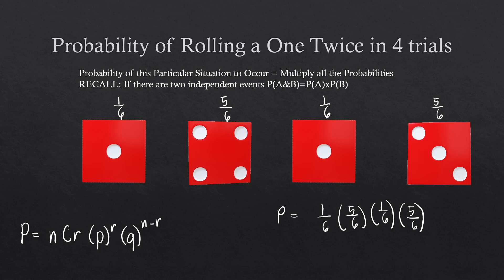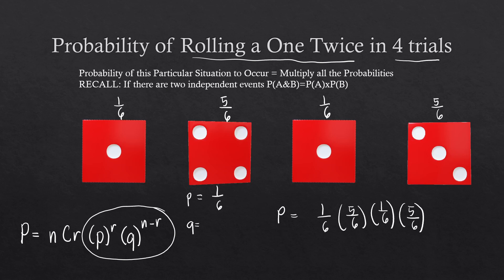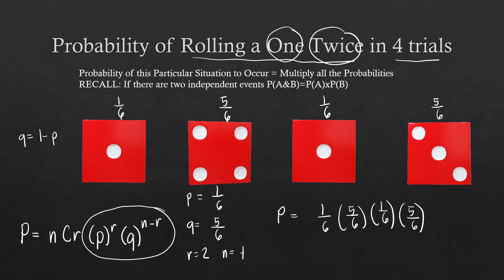However, this doesn't account for all other situations in which we roll a 1 twice in 4 trials. It's possible to get 1 on the second trial and get another number on the third and fourth. This is where the formula helps. P to the power of R with R equal to 2 (since we want two successes), and N equal to 4 trials, gives us P squared times Q to the power of N minus R, which is also 2.